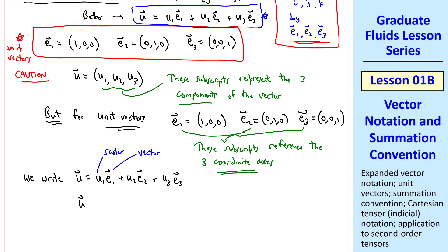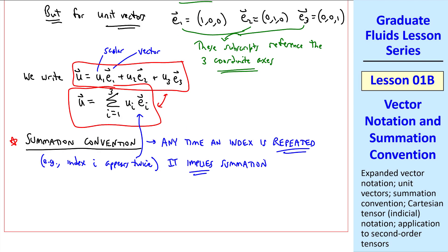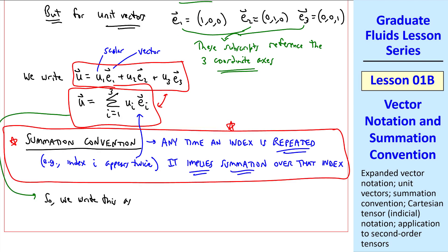Another way to write this in shorthand is to write u equals summation, i equal 1 to 3, of ui ei vector. These mean the same thing. Now I'll introduce the summation convention. Namely, any time an index is repeated, for example, index i appears twice, it implies summation over that index. So we write this equation as u equal ui ei vector. Summation is implied.